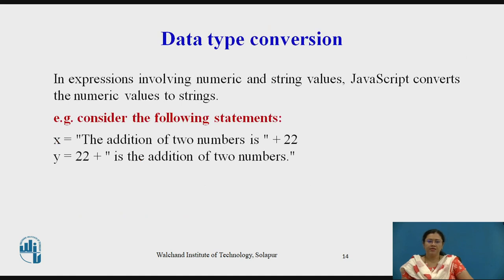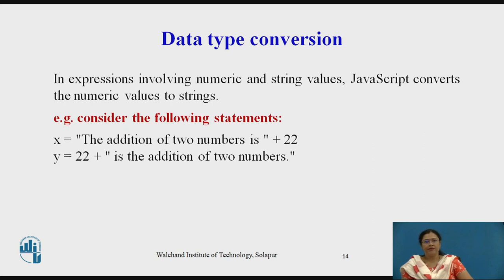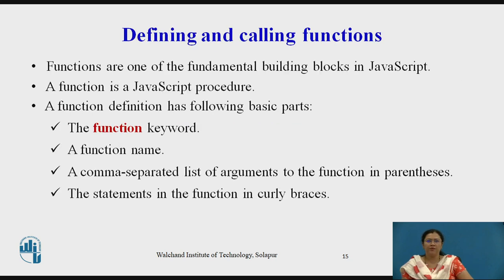Now we will see different data type conversions. In expressions that involve numeric and string values, JavaScript converts numeric values to strings. For example, adding a number like 22 with a string results in automatic conversion of the numeric value to a string.